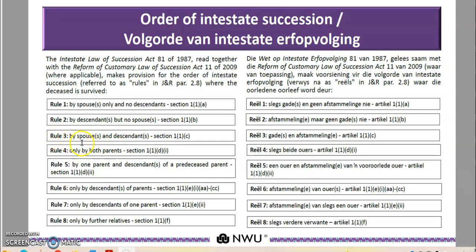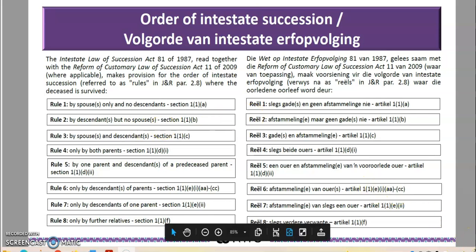Rule number three is a situation where one passes away and leaves behind a spouse or spouses and descendants. That's basically that — so let's delve into our rules.